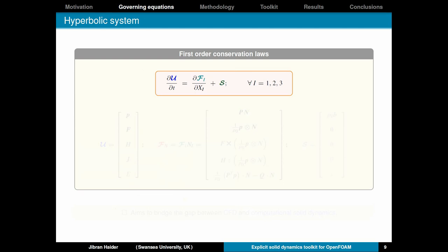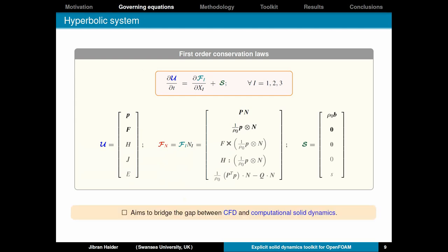Additionally you could include other equations such as the cofactor of deformation H shown here or the Jacobian of deformation J or you could also include the total energy equation. Now if you combine all these equations you can summarize them in this first-order hyperbolic system of conservation laws where U is the vector of conserved variables, F are your normal fluxes, and S is the source term. With this we aim to bridge the gap between computational fluid dynamics and computational solid dynamics.